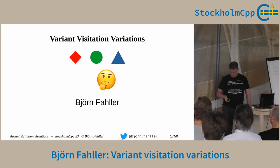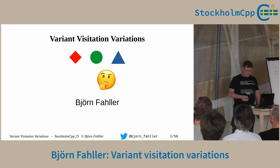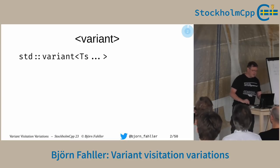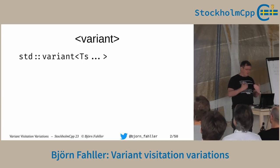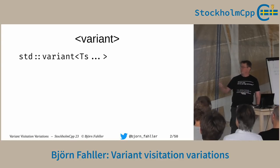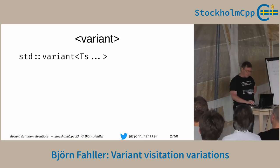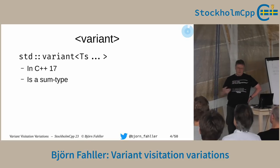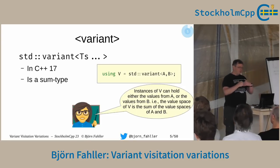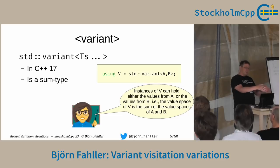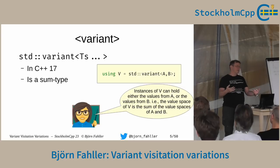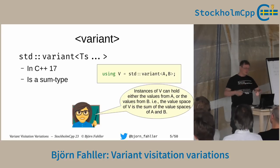For those of you who are not really familiar with it, let's see if this works. Variant came with C++17. It's a template type that takes a number of other types, and it's a sum type. Having a variant v of types A and B means that an instance of v can hold all the values of A and in addition all the values of B. The total value space of v is the sum of the value spaces of A and B.